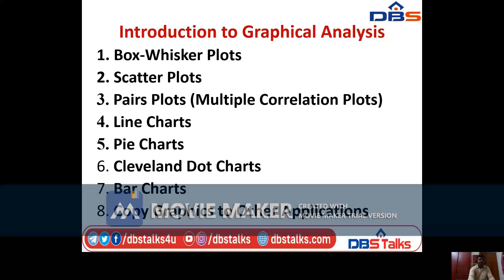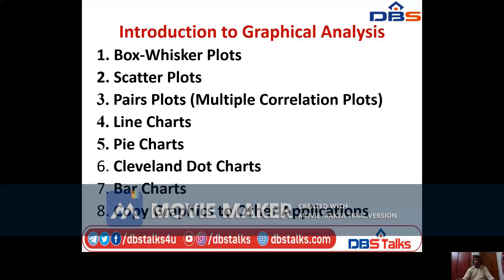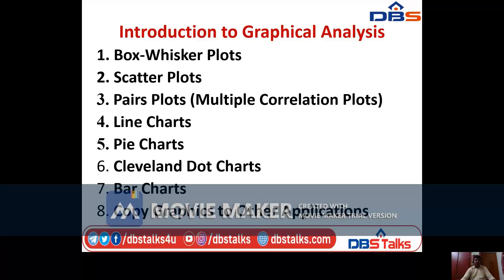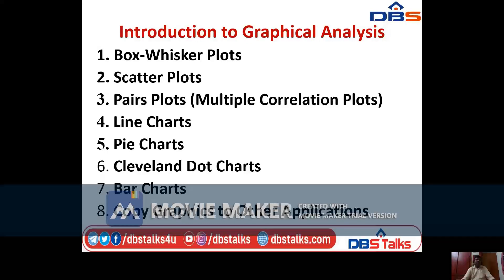The topics available in this graphical analysis chapter are: box whisker plots, scatter plots, pairs plots (also called multiple correlation plots), line charts, pie charts, Cleveland dot charts, bar charts, and copying graphics to other applications. In this video we are discussing box whisker plots as well as scatter plots.